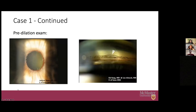Now you take a look with the slit lamp and try the gonio lens. On the slit beam image you can see the pupil and iris margin. Gonioscopy is a special lens used primarily in glaucoma clinic to help visualize the structures of the angle — where aqueous humor drains out of the eye.